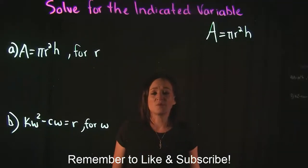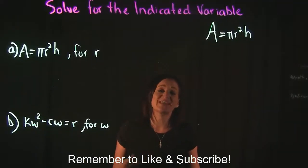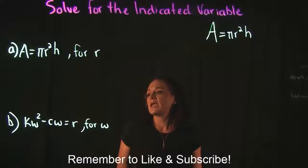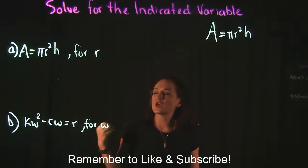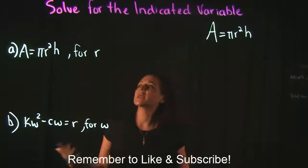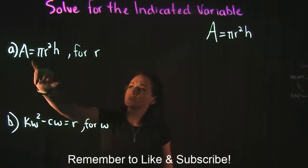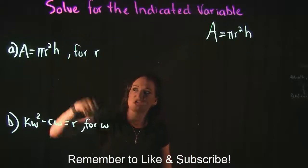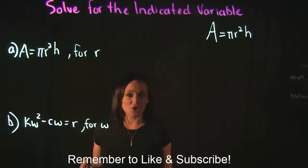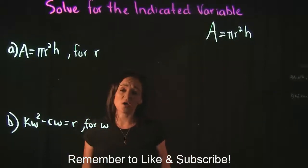For the following problems, we're going to focus on solving for the indicated variable. For example, in A and B, we're given an equation and asked to solve for a specific variable. If we take a look at A, we have A is equal to pi r squared h, and they want us to solve this equation for r.